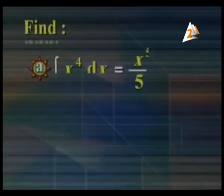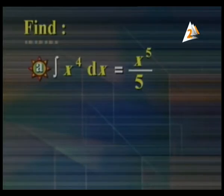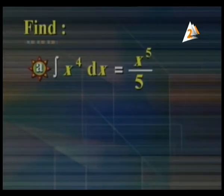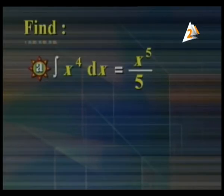First example, find number (a): integration of x to the power 4 dx equals what? In integration, we add 1 to the power and divide by the new power. So the integration of x^4 dx equals x^5 over 5, plus c, the constant of integration.